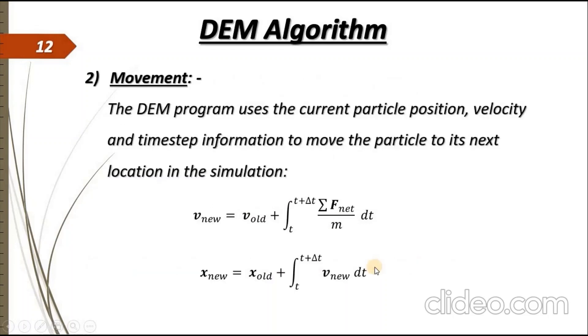For movement, the DEM program uses the current particle position, velocity, and the time step information to move the particle to its next position or location in the simulation. So based on these equations, we can calculate the new particle velocity and the new particle position, in which it can be seen that the time step information and the sum of forces acting on the particle is necessary.